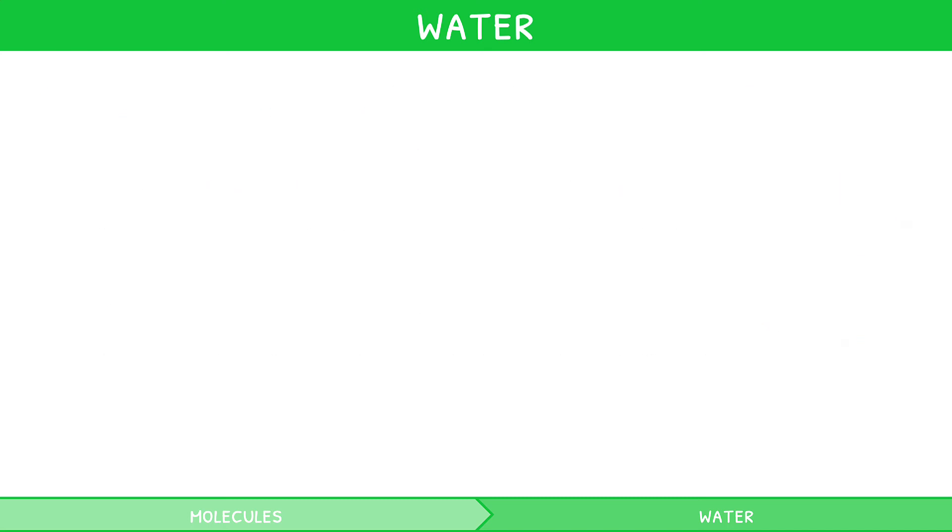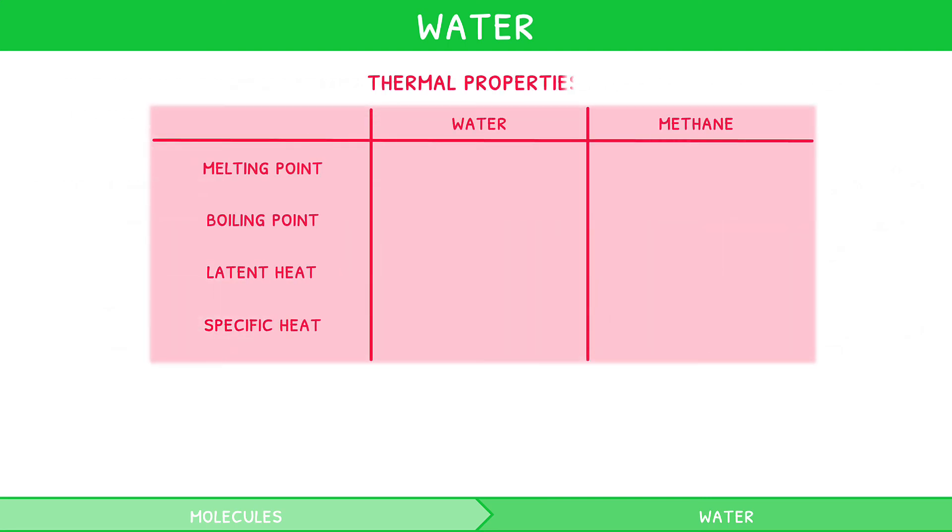Quite commonly in the IB biology exam, you can be expected to contrast water's thermal properties with regards to a hydrophobic molecule, such as methane. Water melts at zero degrees, boils at 100 degrees, has a latent heat of vaporization of 2.26, and a specific heat capacity of 4.2.